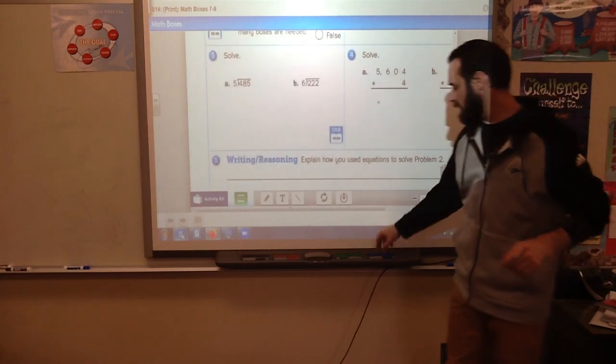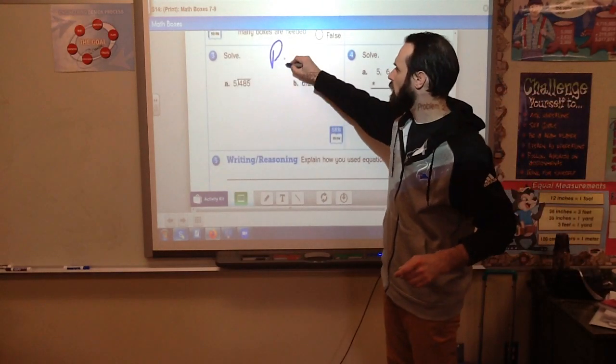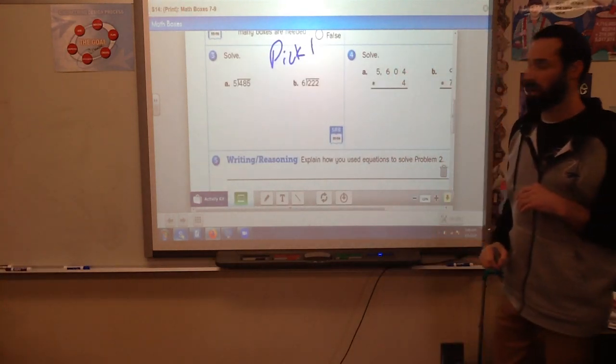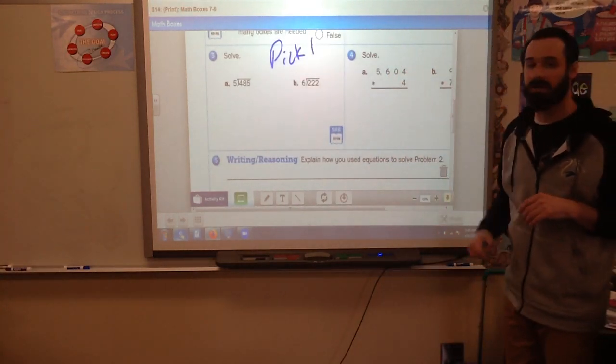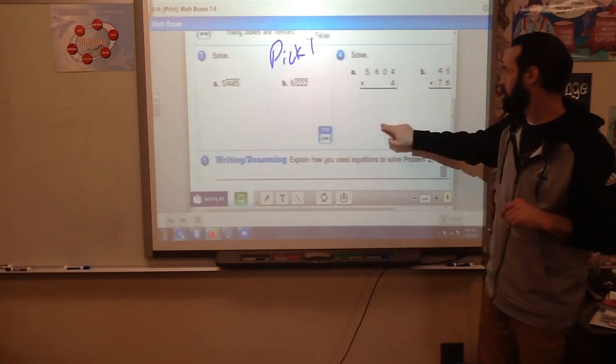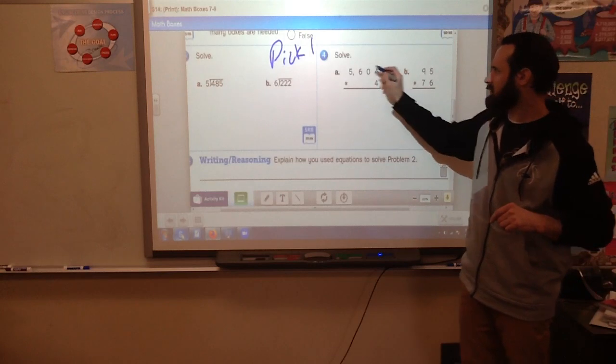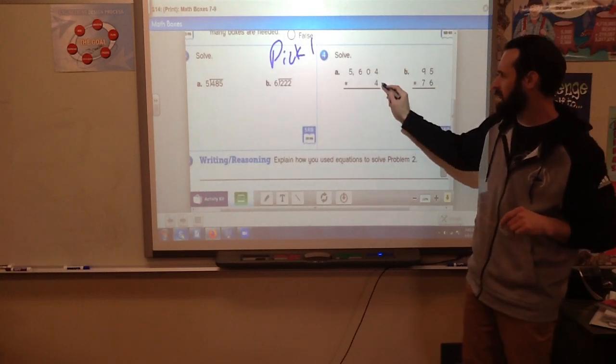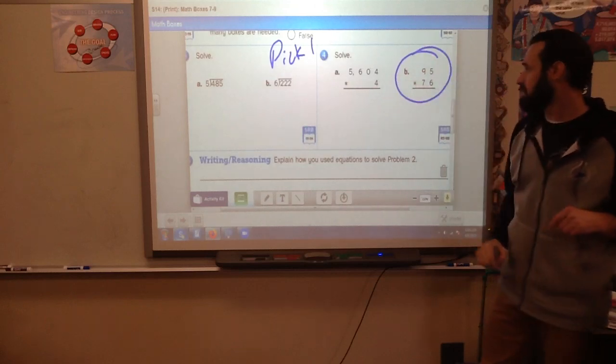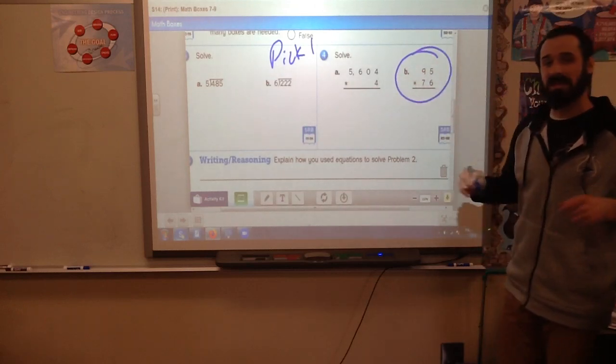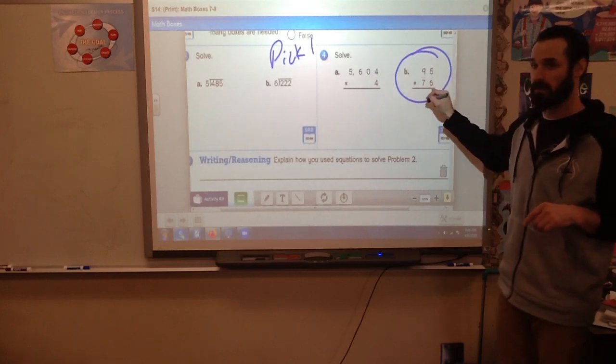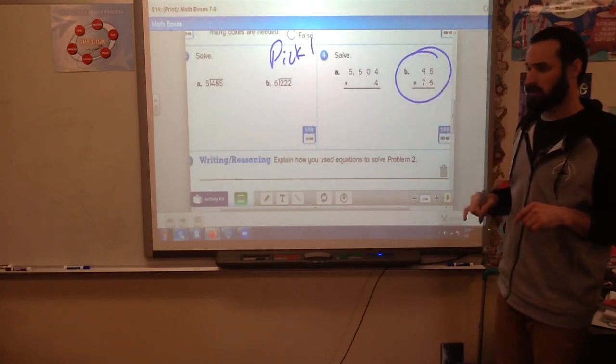On this one, pick one. I don't care which one you do, pick one division using partial quotients. Over here on number four, I think this one's pretty easy, but you're going to do letter B because that's where we need help, when we have more than one number here when we're multiplying.